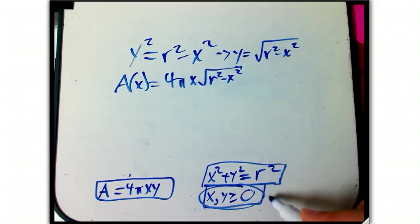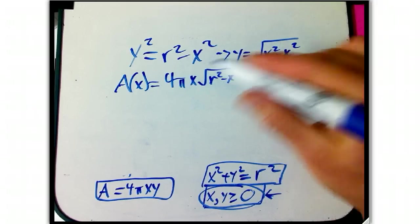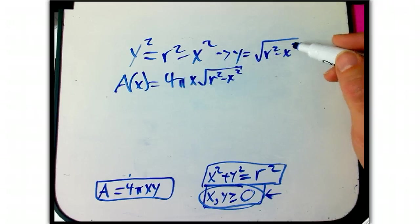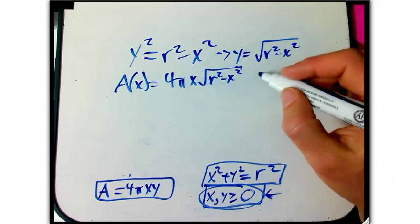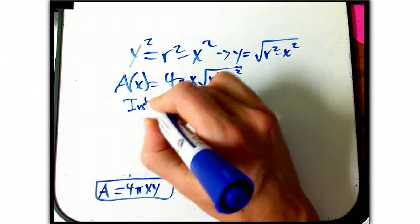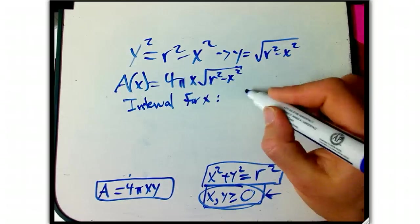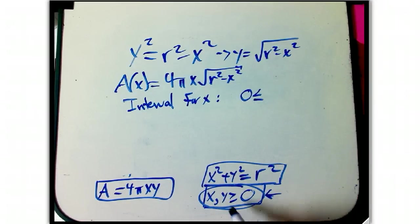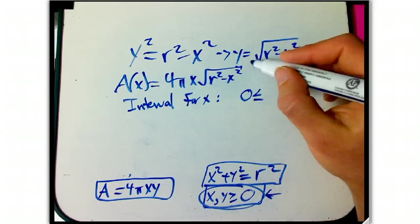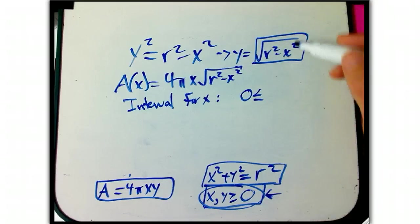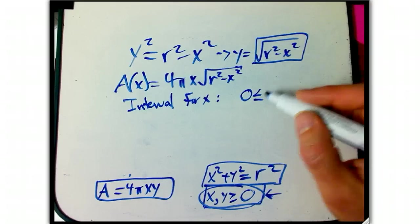And so my A of X now is going to be 4 pi X root R squared minus X squared. And now is the time to take these sort of simple constraints and turn them into a boundary, an interval for X. Well, X has to be non-negative, and then if Y is going to be non-negative, whoa, that means, or if Y is even going to make sense for this problem, the biggest X can be is equal to R, which makes sense.